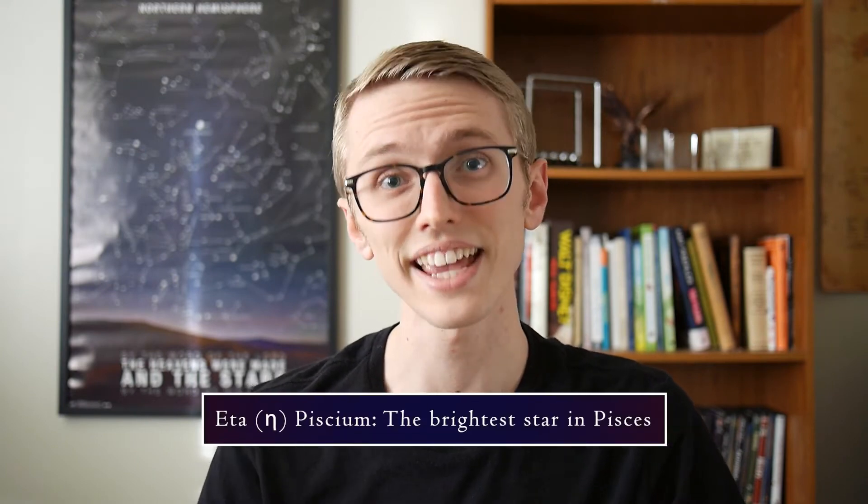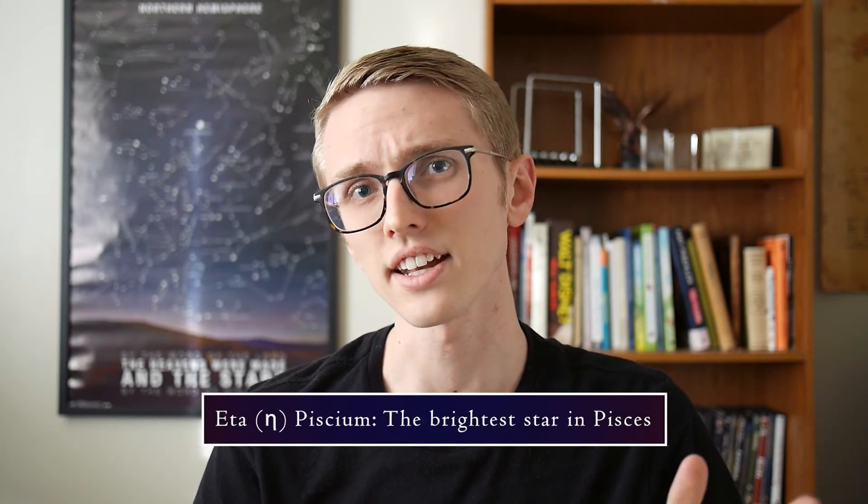Have you ever wondered how bright our sun is compared to the rest of the stars? Take Pisces for example. Pisces is one of the dimmest zodiac constellations next to Cancer. If we took the brightest star in Pisces, Eta Piscium, and put it next to the sun, well, at more than 26 times the size of our sun, we would be toast, pretty much literally.